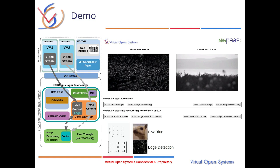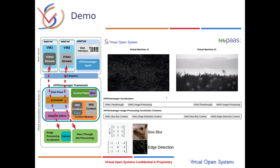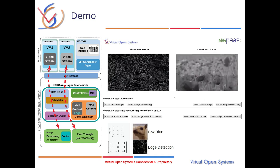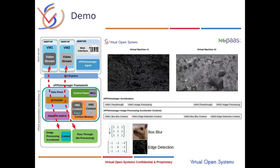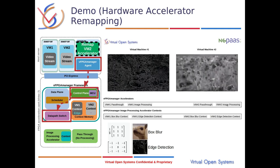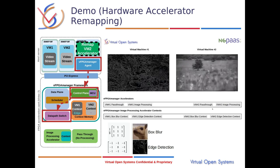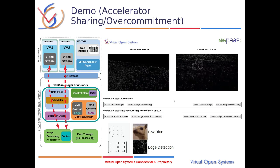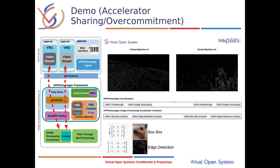Now the demo will be started. The demo starts with VM1 processing its video with an edge detection context and VM2 having no processing applied to its video. Through the web interface we remap VM2 to the image processor accelerator. The changes take a few seconds to be visible, which is because of the video buffering of our web interface.